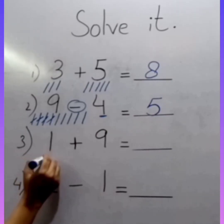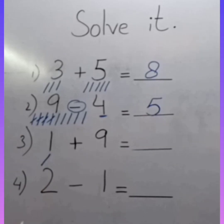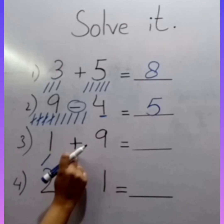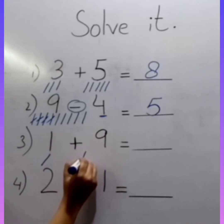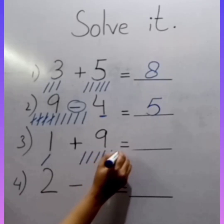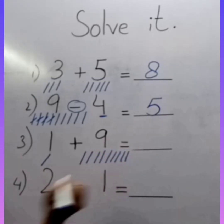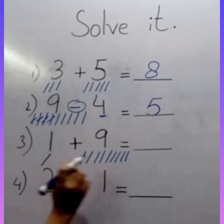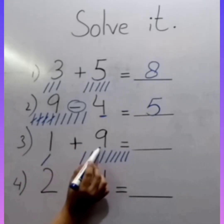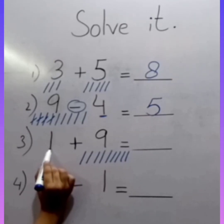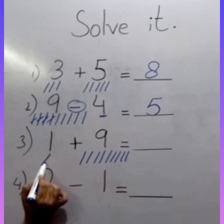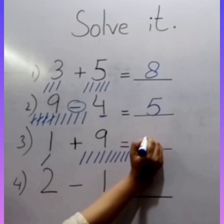Draw 1 line. Here is the sign of addition, so we add. 1 plus 9 — draw 9 more lines: 1, 2, 3, 4, 5, 6, 7, 8, 9. It's a very easy way to add the quantity. 1 plus 9 equals 10. We write 10 here.